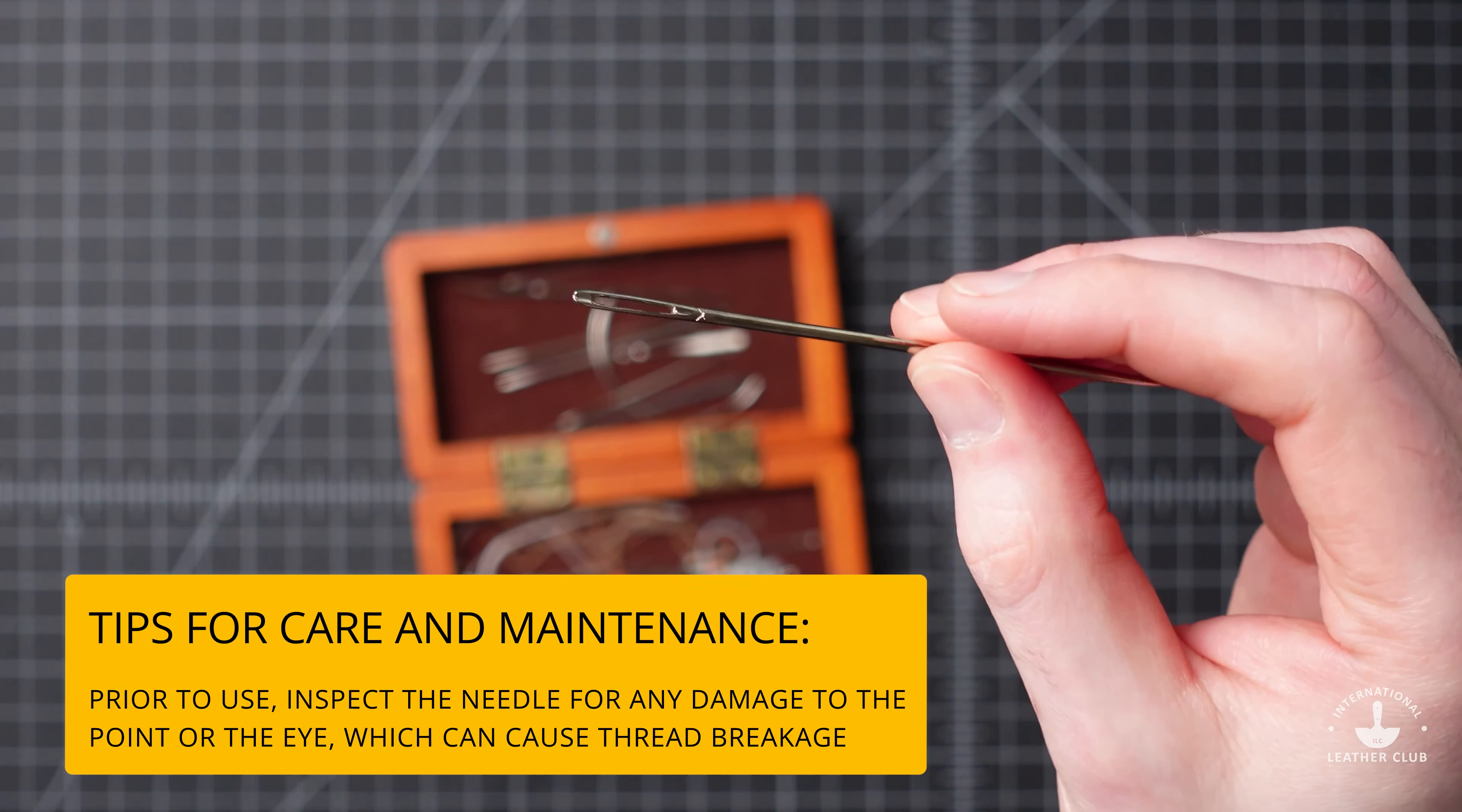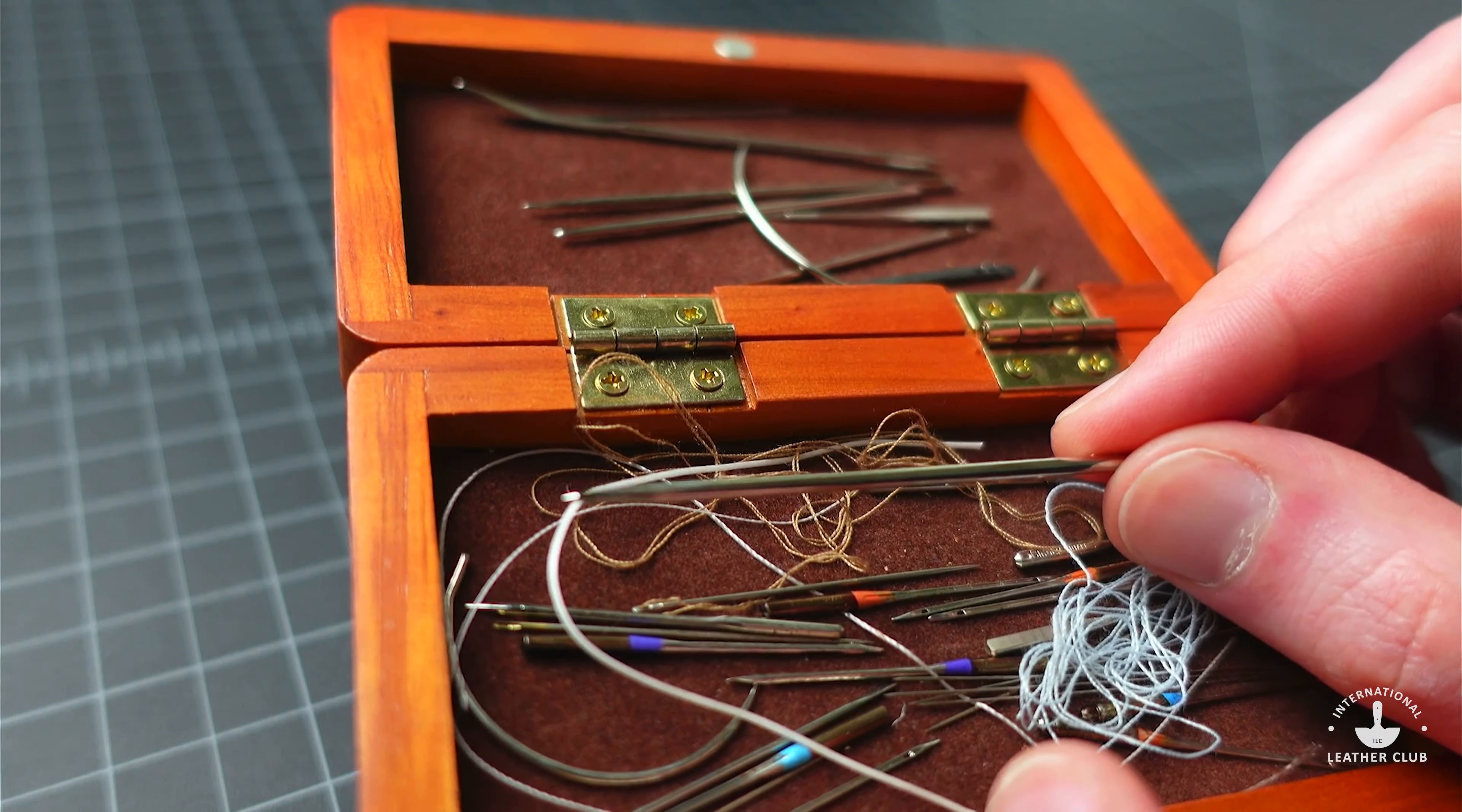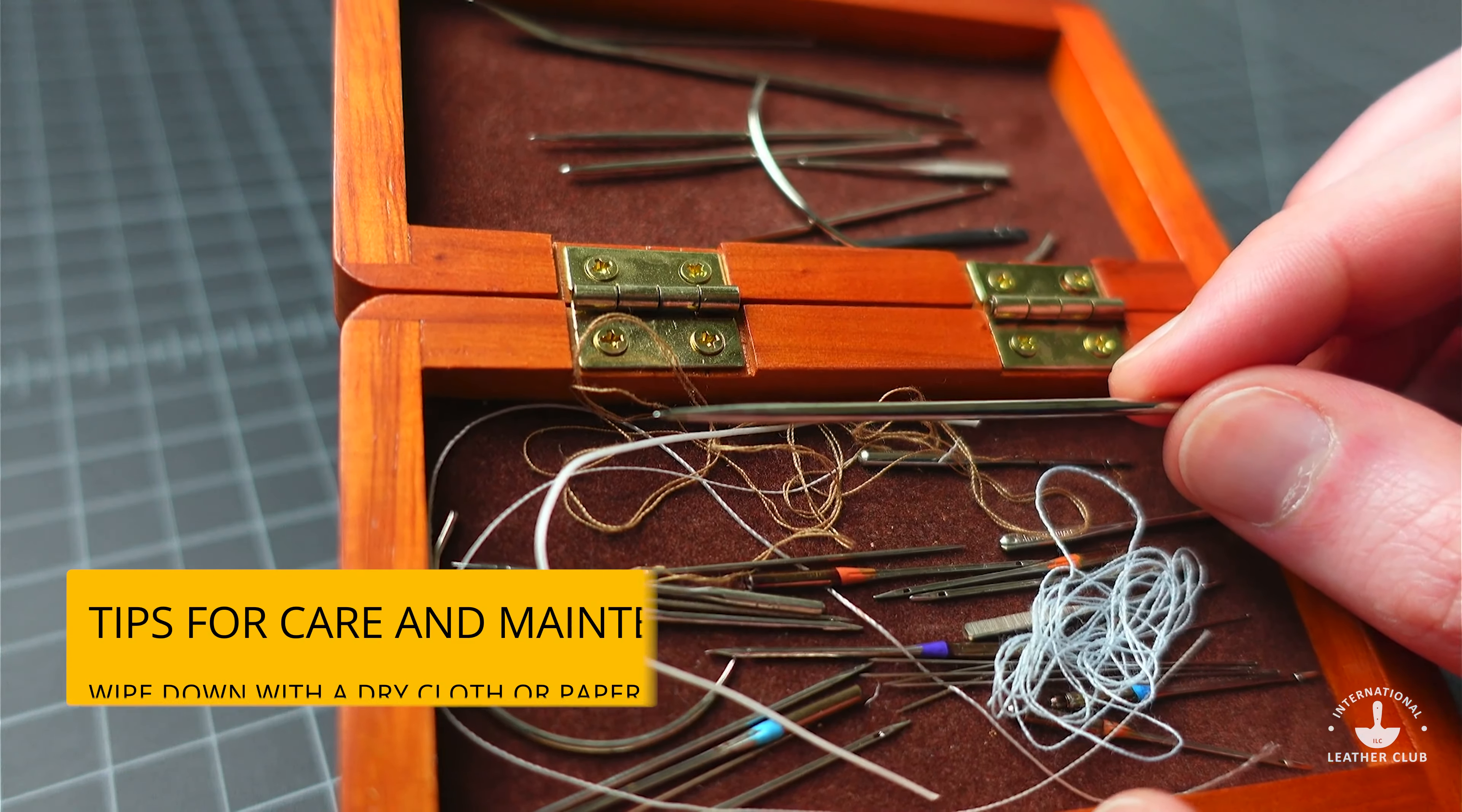Additionally, check your eyelets and make sure that they are in good working order, nothing is bent or broken. And if possible, depending on what you're stitching, maybe you're working through an oiled piece of leather or something that may transfer any kind of compositions onto your needle, you may want to wipe them down with a dry lint free cloth and that way they're clean and ready for the next time you'll need them.